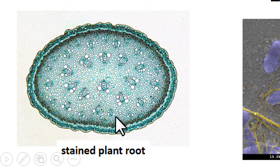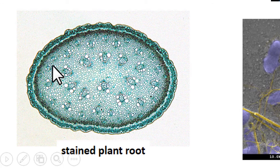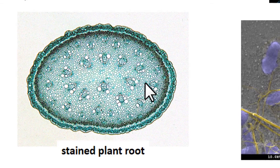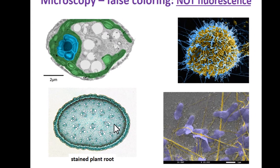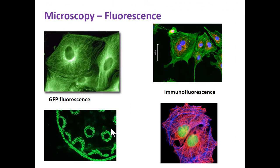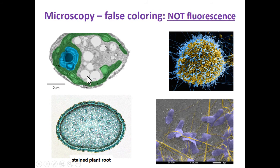You also might see different colors in something that's stained. This is a plant root cross-section — you've probably looked at these in general biology class — and they can use different stains to get different colors. But again, this is not fluorescence, it's staining. With fluorescence, you're always going to have a black background, because you have to darken out everything and then the fluorescent molecules light up. Even though this image has a dark background, remember you cannot get fluorescence with electron microscopy — so this is false coloring.